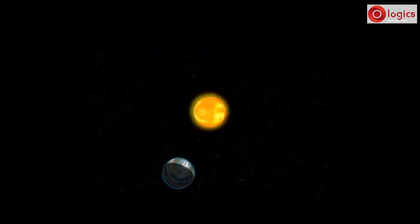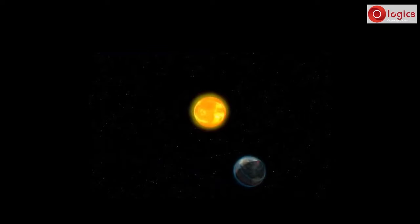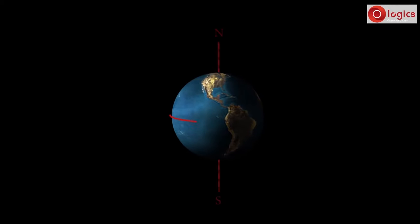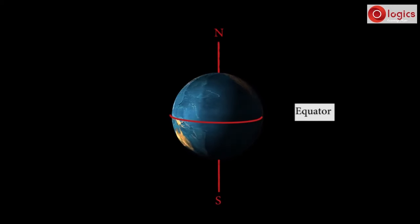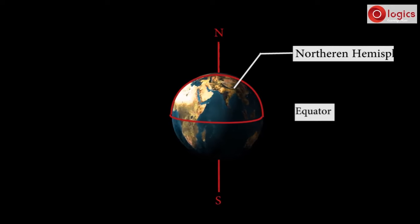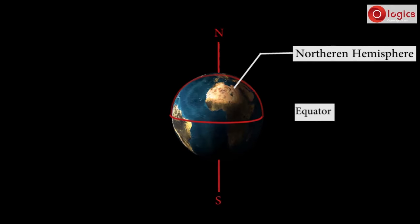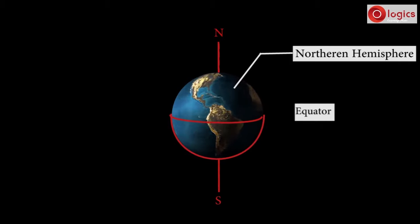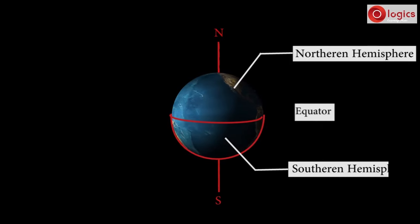Now, let's understand how seasons are formed. Let us observe the Earth closely. This is the equator. Sphere above equator is northern hemisphere. Sphere below equator is southern hemisphere.